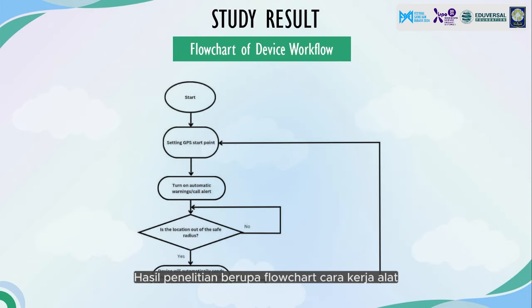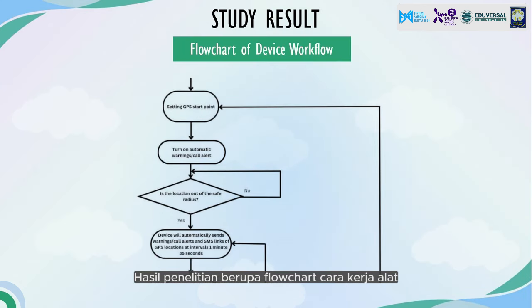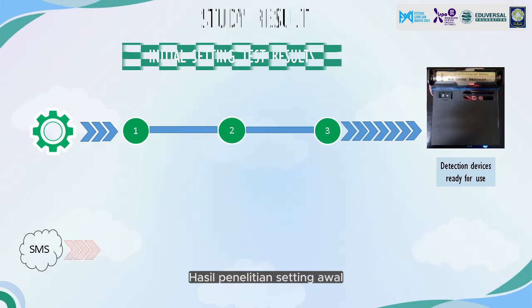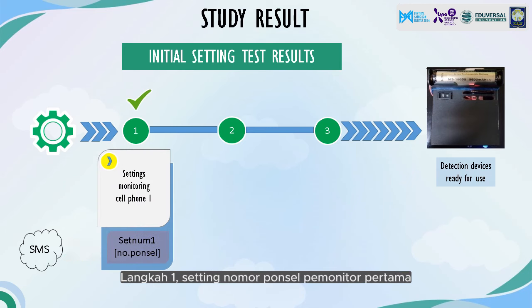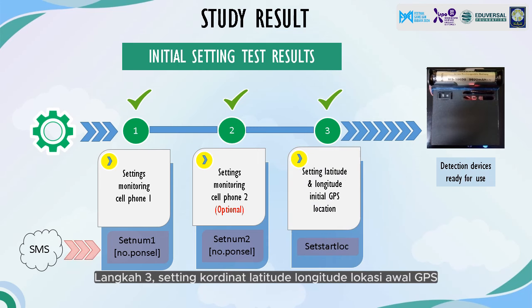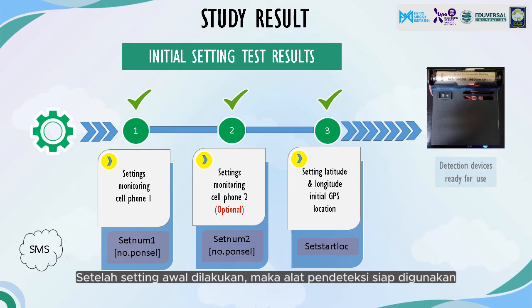Research results are presented in the form of a device flowchart. For initial settings: Step 1 — set the cell phone number of the first monitor. Step 2 — set the cell phone number of the second monitor, only if there are two monitors. Step 3 — set the latitude and longitude coordinates of the initial GPS location. After the initial setting is done, the detector is ready to use.